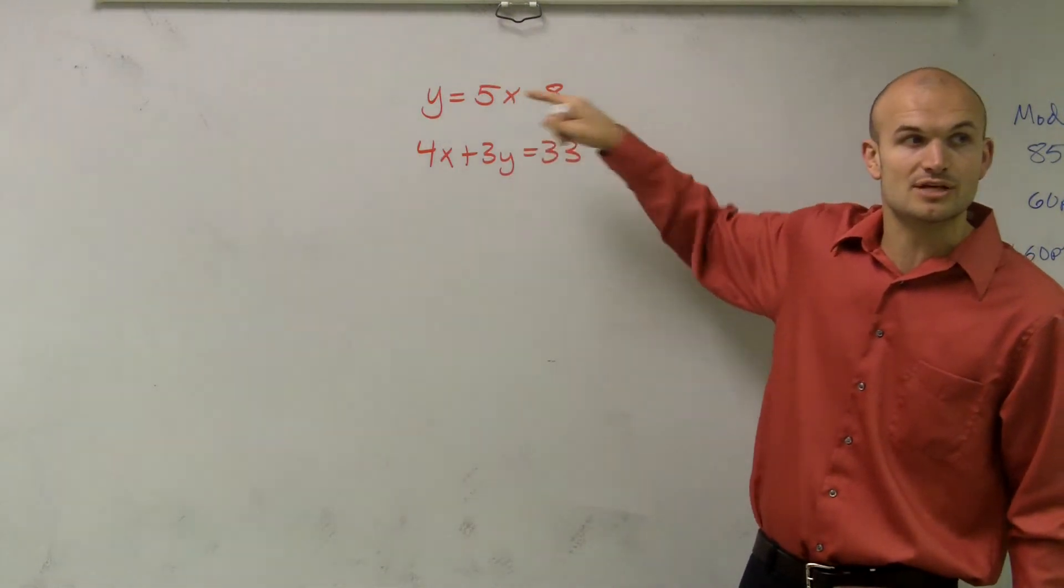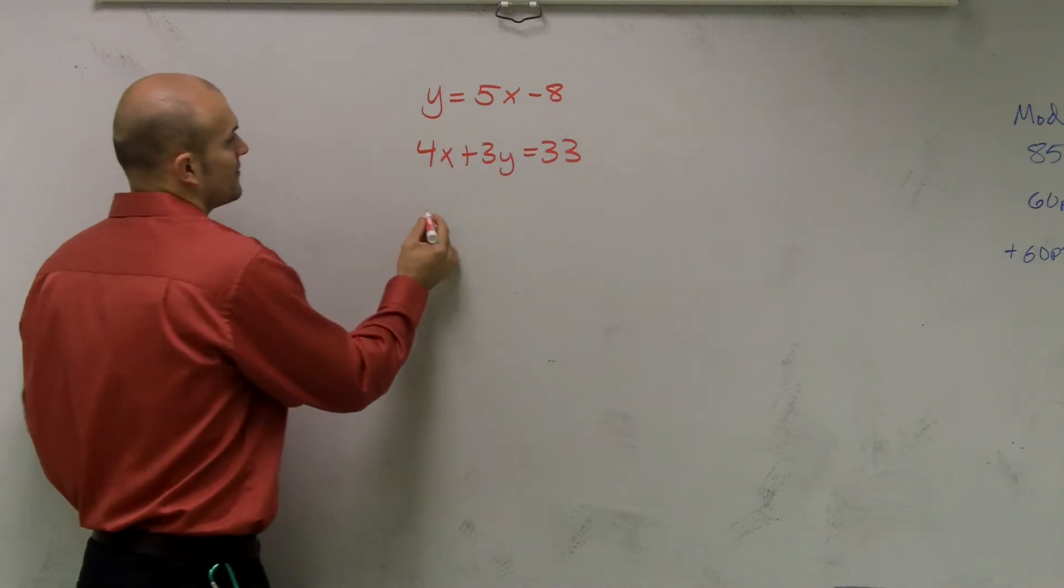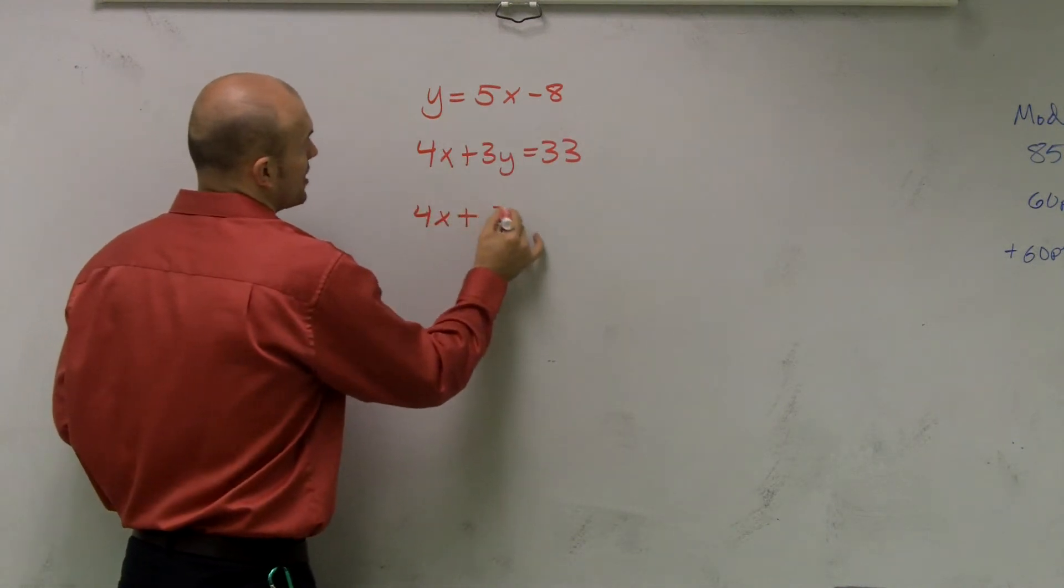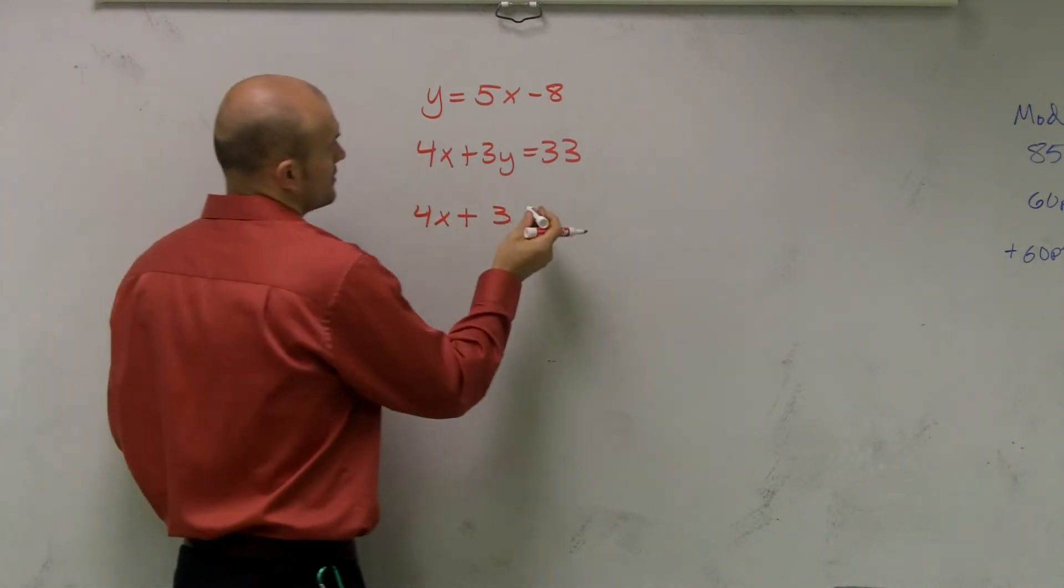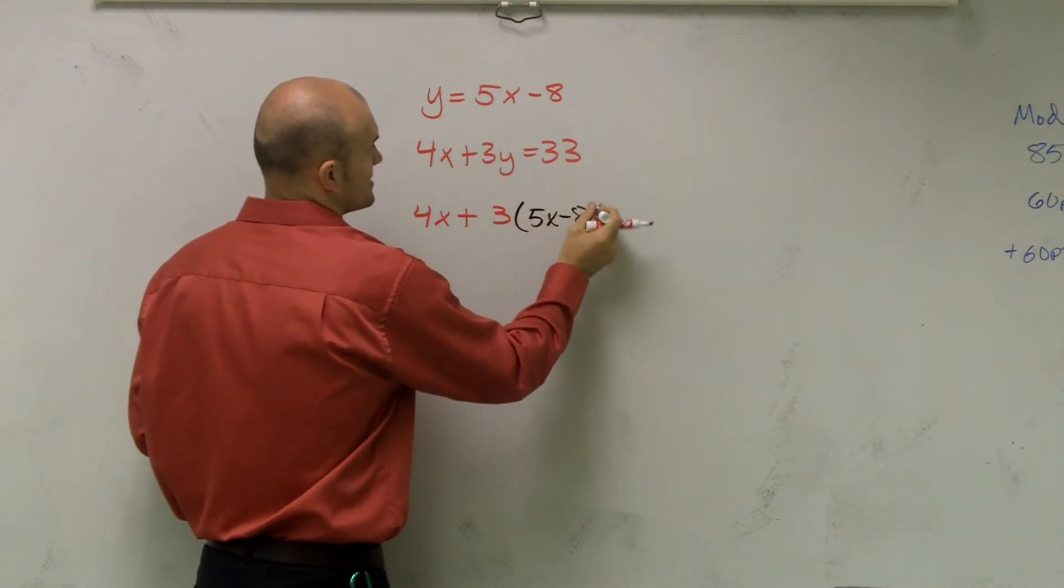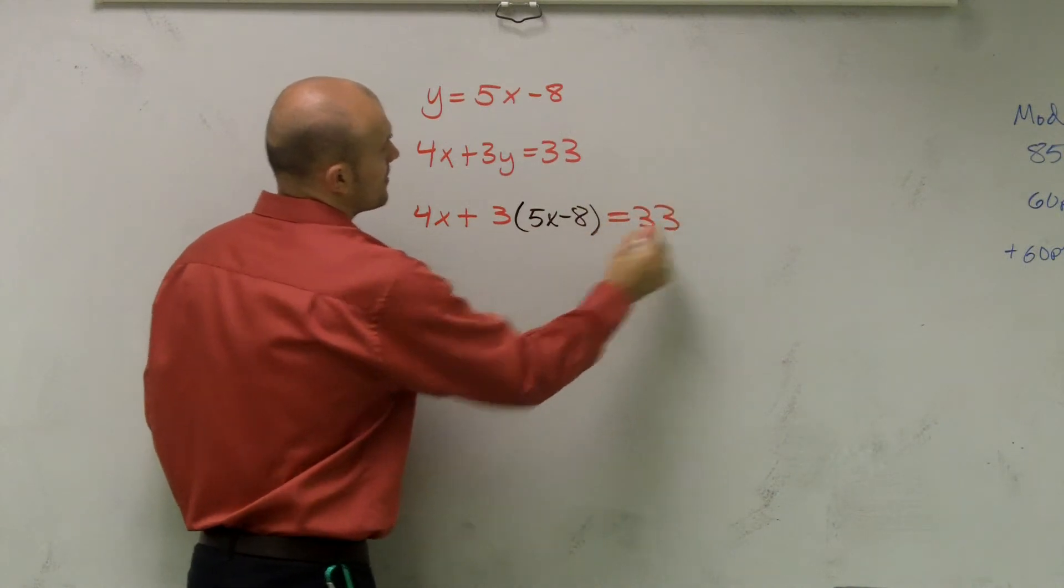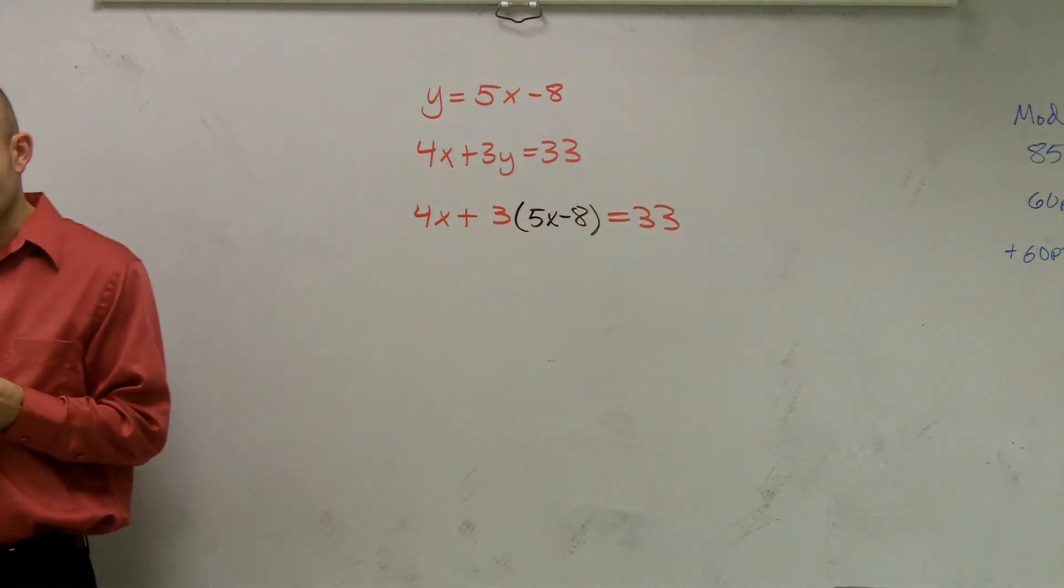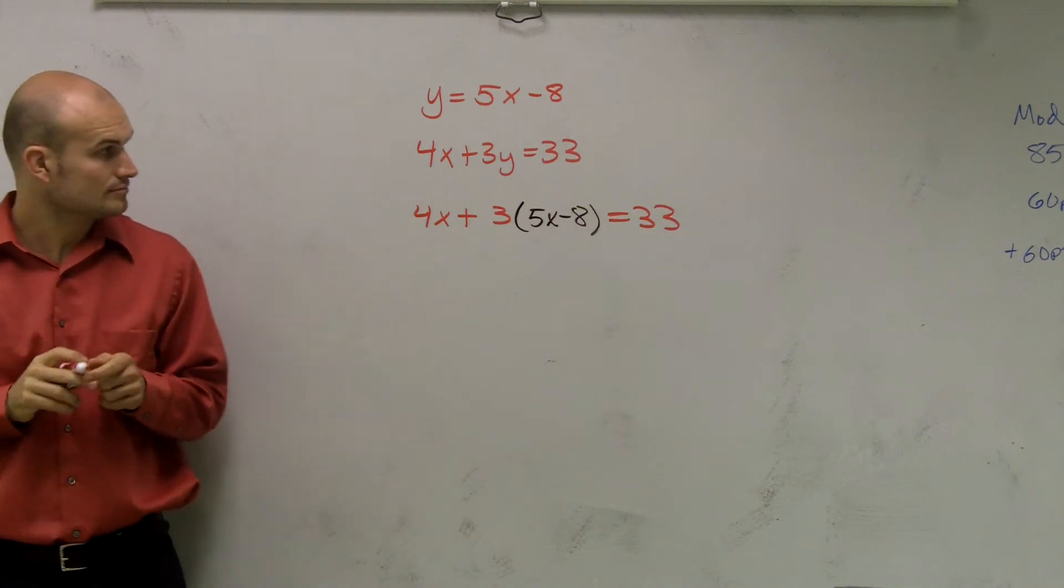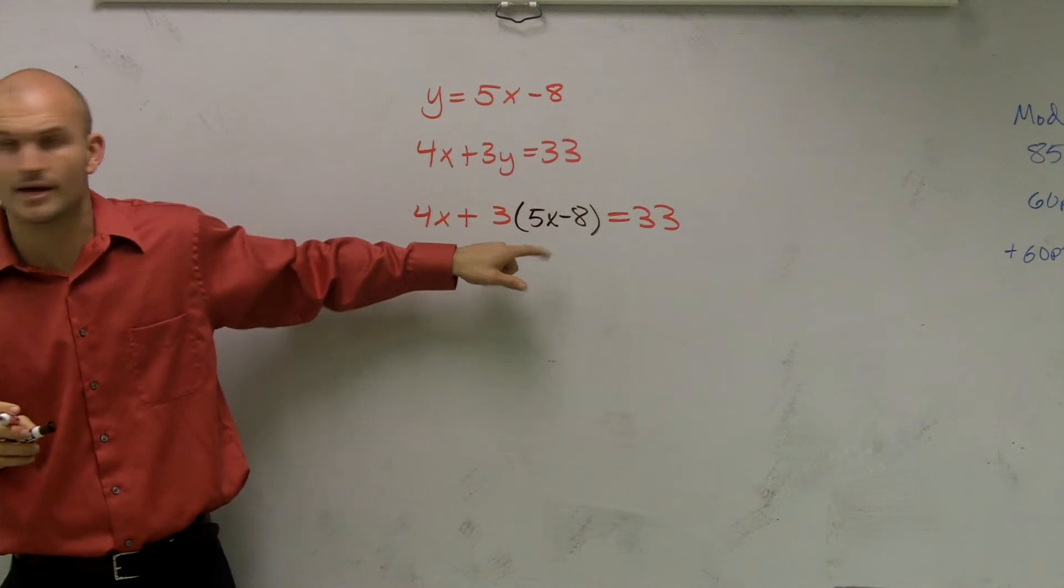So what I'm going to do is substitute in the new value. So therefore, I'm going to have 4x plus 3 times 5x minus 8 equals 33. Does everybody understand it? All I did was I took this value and I plugged it in.